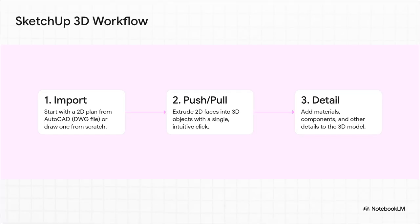The workflow in SketchUp is famous for being just so simple. You can import a 2D plan — maybe one you made in AutoCAD — or just draw one from scratch. Then the magic happens: you use the push-pull tool to pull your flat shapes up into a 3D structure. From there, you start adding details like furniture and textures. The whole thing feels less like you're drafting and more like you're sculpting with digital clay.